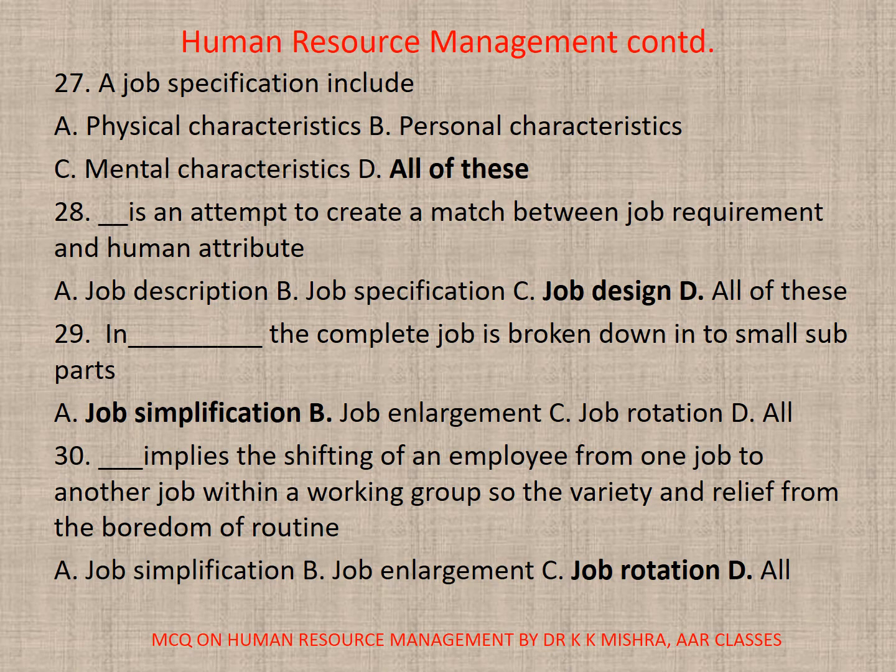Question 27. A job specification includes: A. Physical characteristics. B. Personal characteristics. C. Mental characteristics. D. All. The correct option is D. All. Question 28. This is an attempt to create a match between job requirement and human attribute, known as job design. The correct option is C.